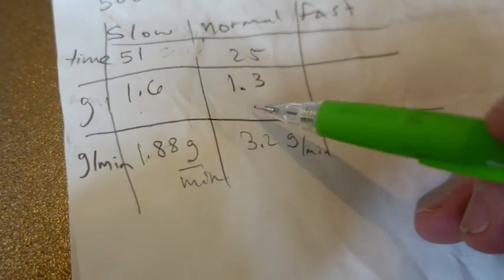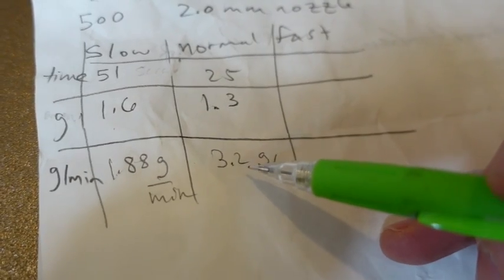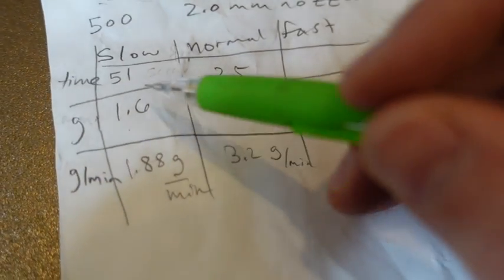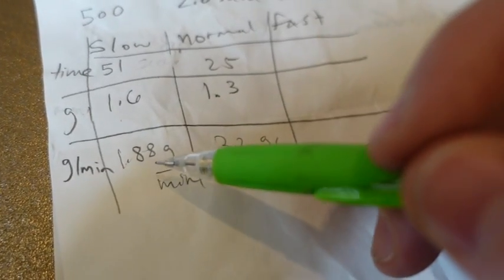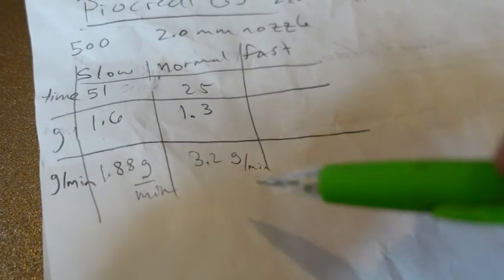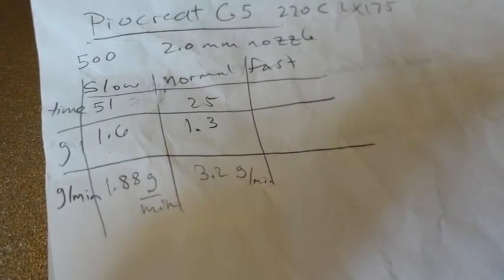So, normal yields 1.3 grams in 25 seconds. That works out to be 3.2 grams per minute. And then slow is 1.88 grams per minute. And you can convert this to pounds per hour, grams per hour, whatever you want to do.